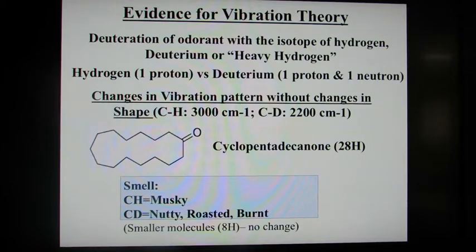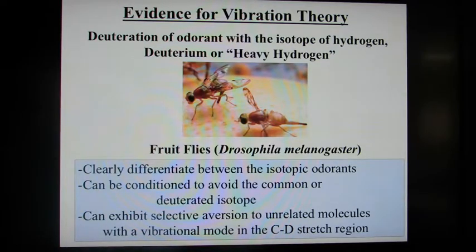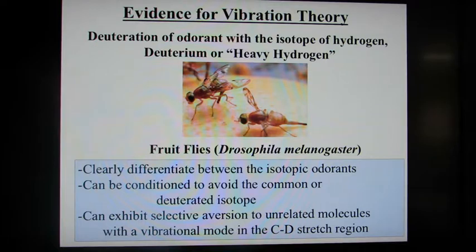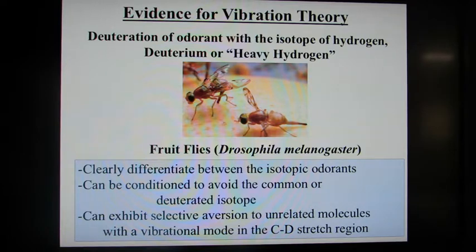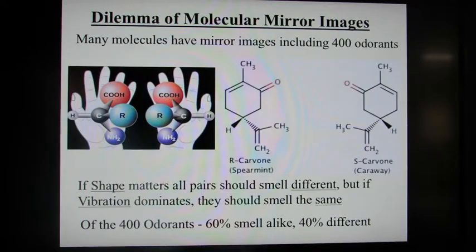One caveat is that molecules with only eight hydrogens or less did not show this change in smell. Another approach used fruit flies, which have a very sensitive sense of smell. With deuteration of the odorant using heavy hydrogen, the fruit flies could clearly differentiate the isotopic odorants and could be conditioned to avoid either the common or deuterated isotopes. They could also exhibit selective aversion to unrelated molecules with a vibrational mode in the CD stretch region — meaning these sensitive insects were detecting vibrational modes in their sensory receptors.